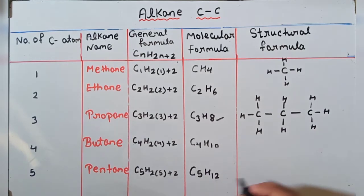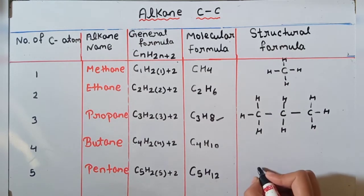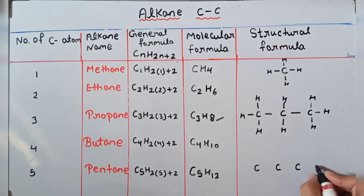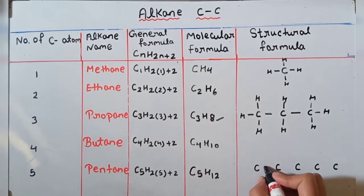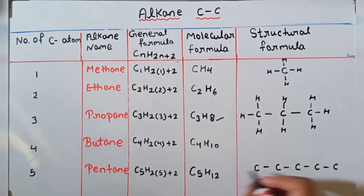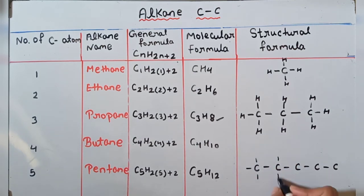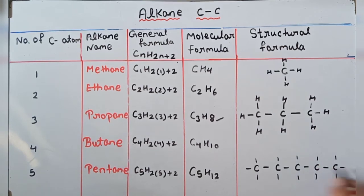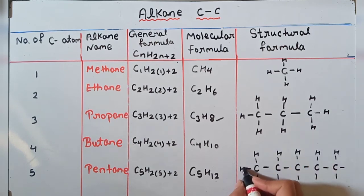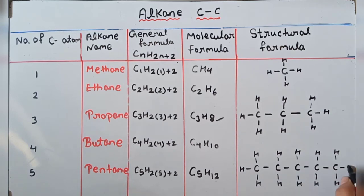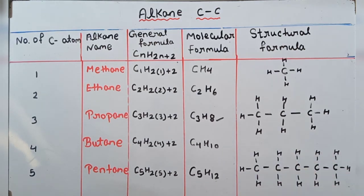Ab draw karte hain C5H12 ke liye, that is for pentane structural formula. Carbon kitne hain — 5. Yahan par main show karti hun 1,2,3,4,5. Then single bonds add karenge. Carbon ka ek bond hai aur kitne chahiye — 3. Remaining valencies hydrogen ke saath share karte hain. Carbon honge 1,2,3,4,5 aur hydrogen count karein — hydrogen 12 honge: 1,2,3,4,5 upar, 5 niche — that is 10,11,12.